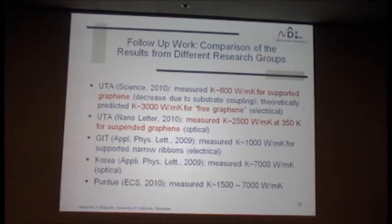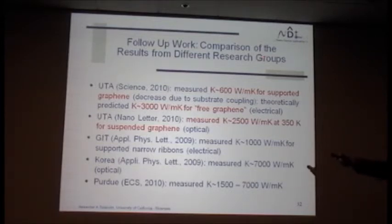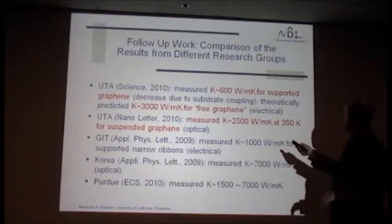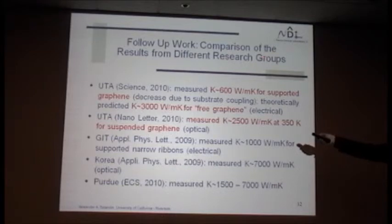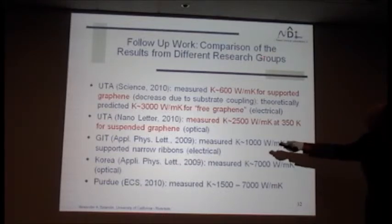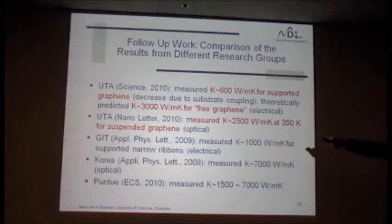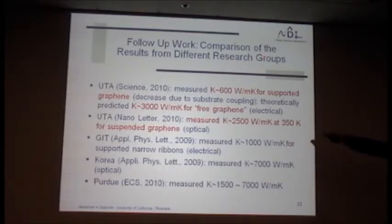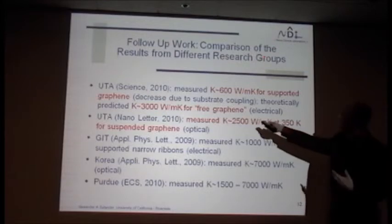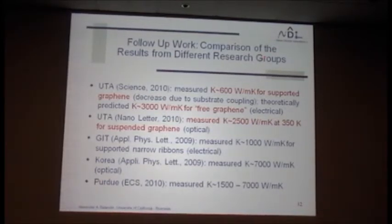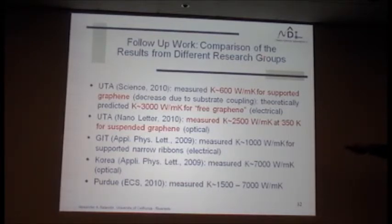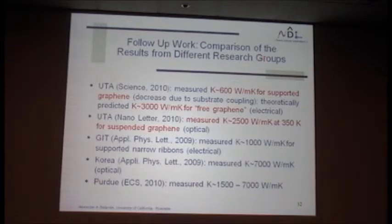The most notable follow-up work was at UT Austin, where they had single-layer CVD-grown graphene supported on a substrate — a different quality — and they got 600 W/m·K. They also did their own calculation which differs from ours and obtained 3,000 W/m·K, also above the bulk value, attributing the reduction to substrate coupling. They still delivered a positive message: this is still much higher than copper, and it's only one atomic layer, so if you have more layers you may have less deterioration. They also did suspended measurements and got a value above the bulk graphite limit.